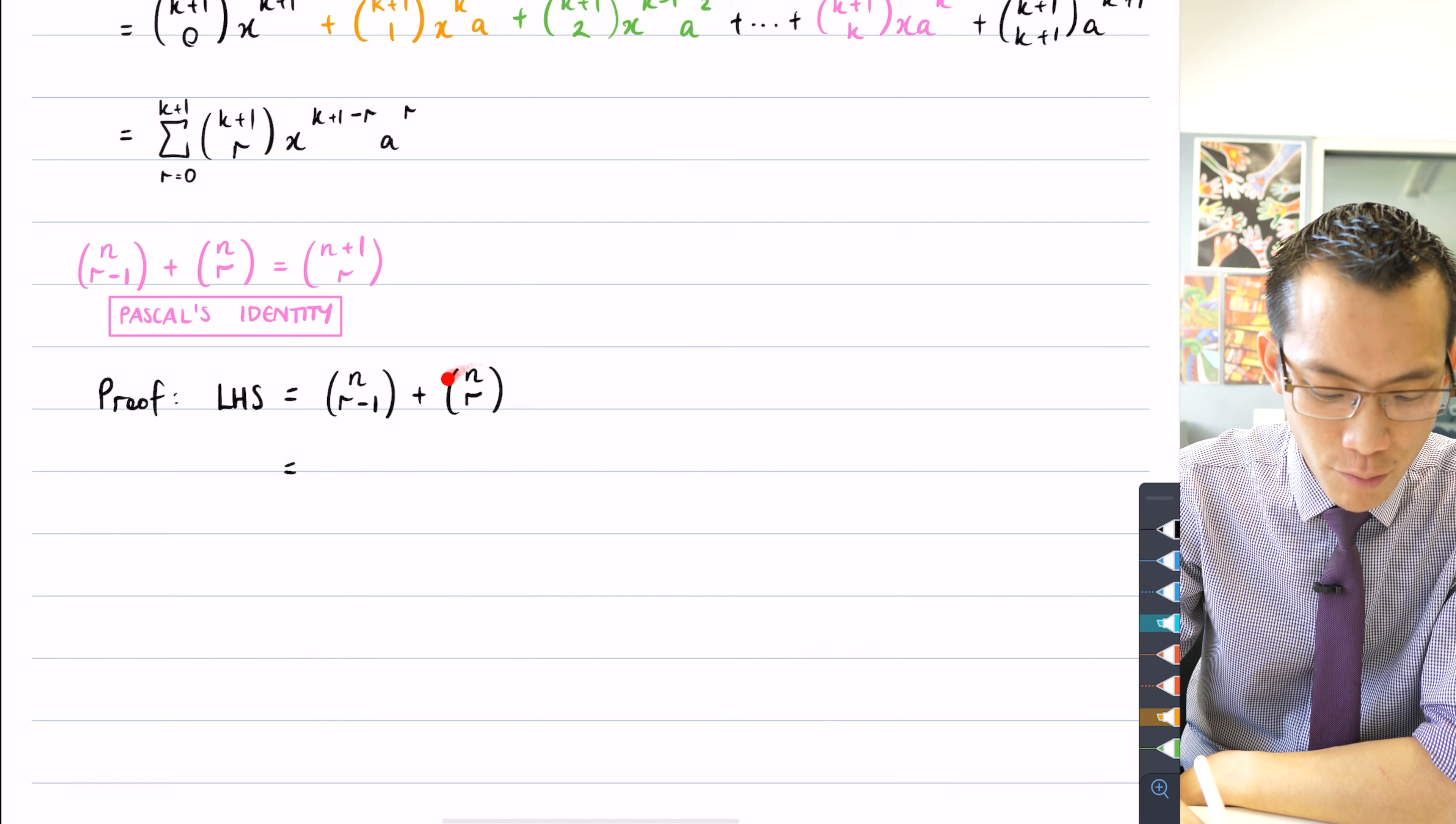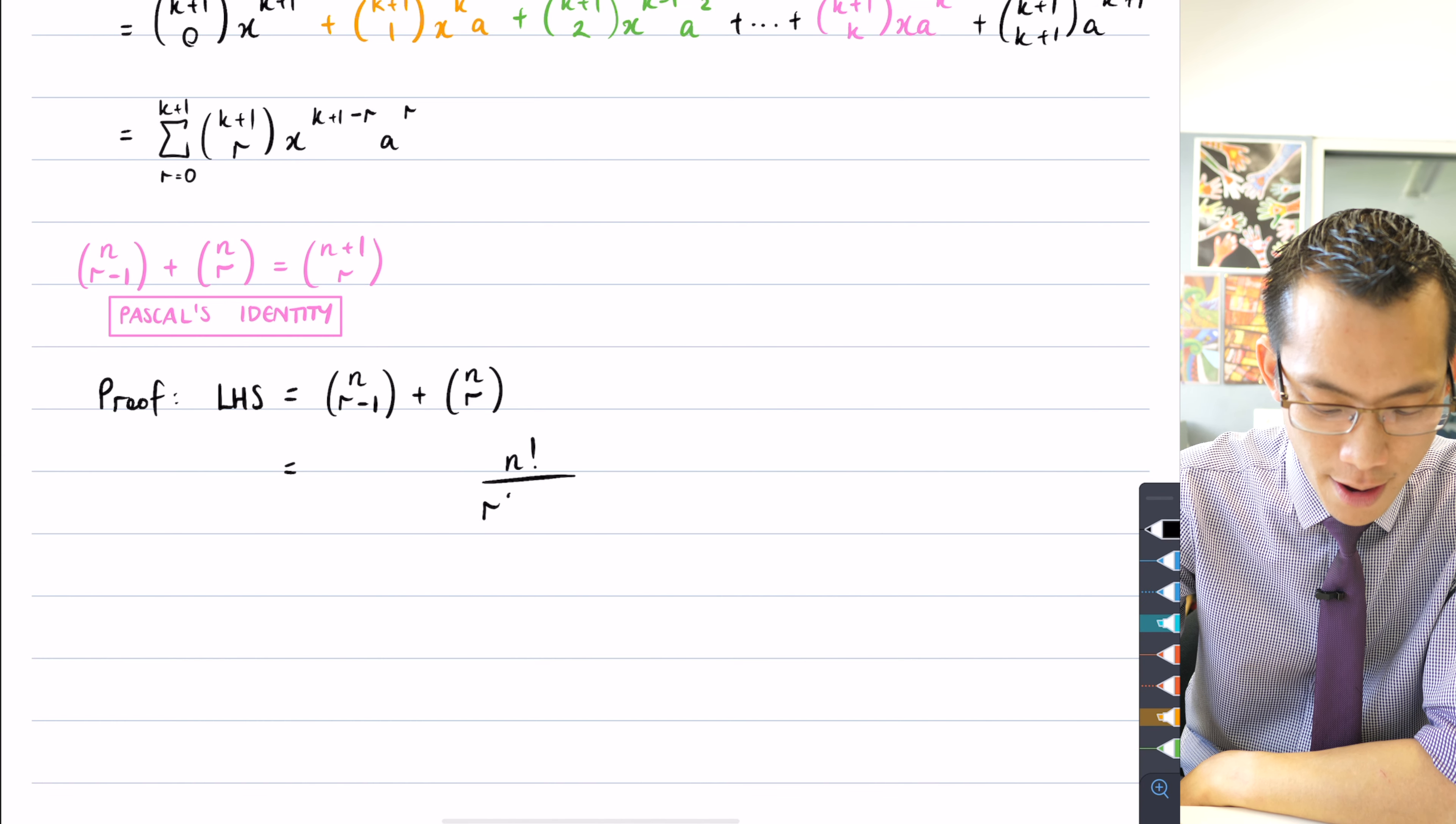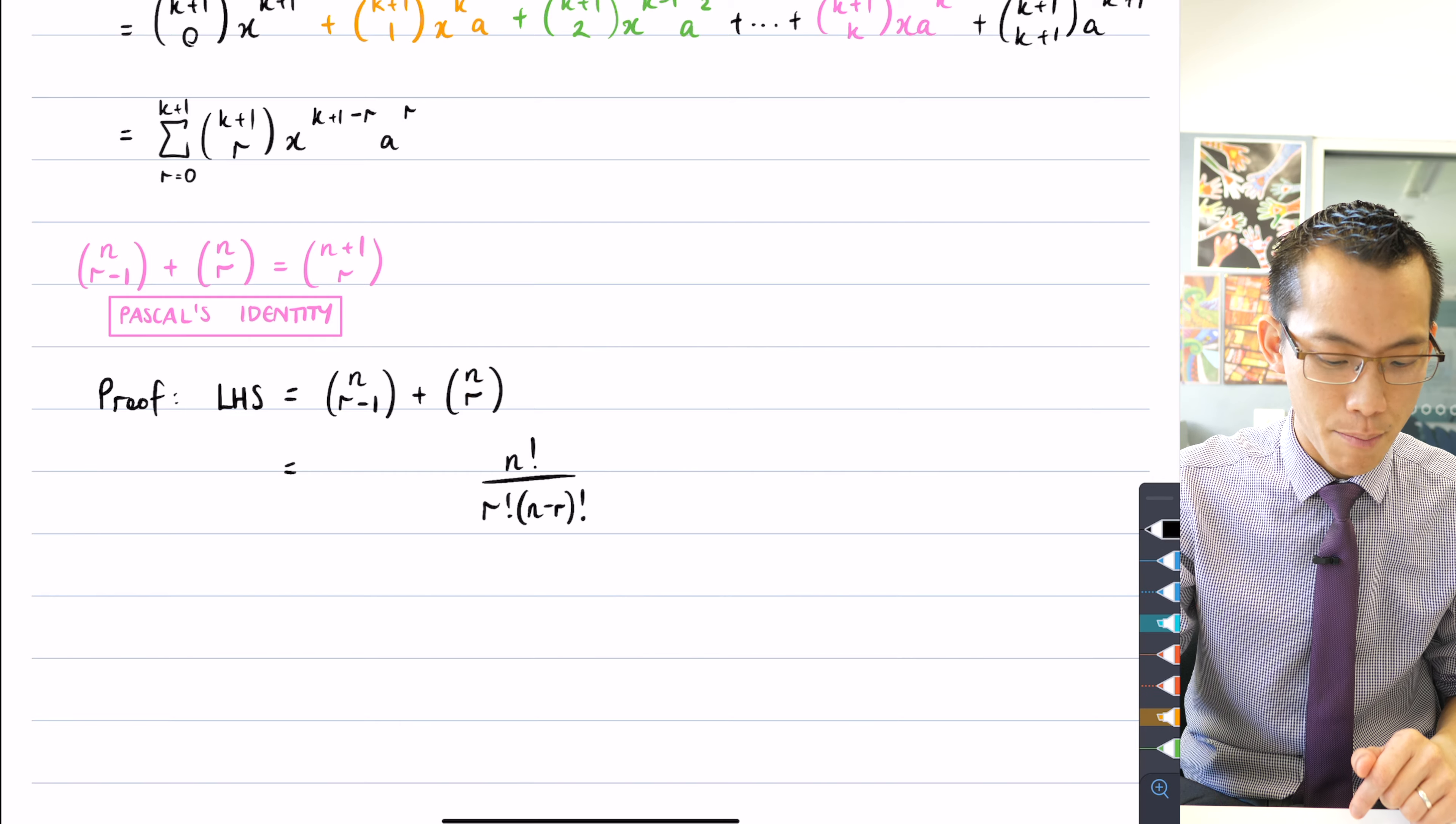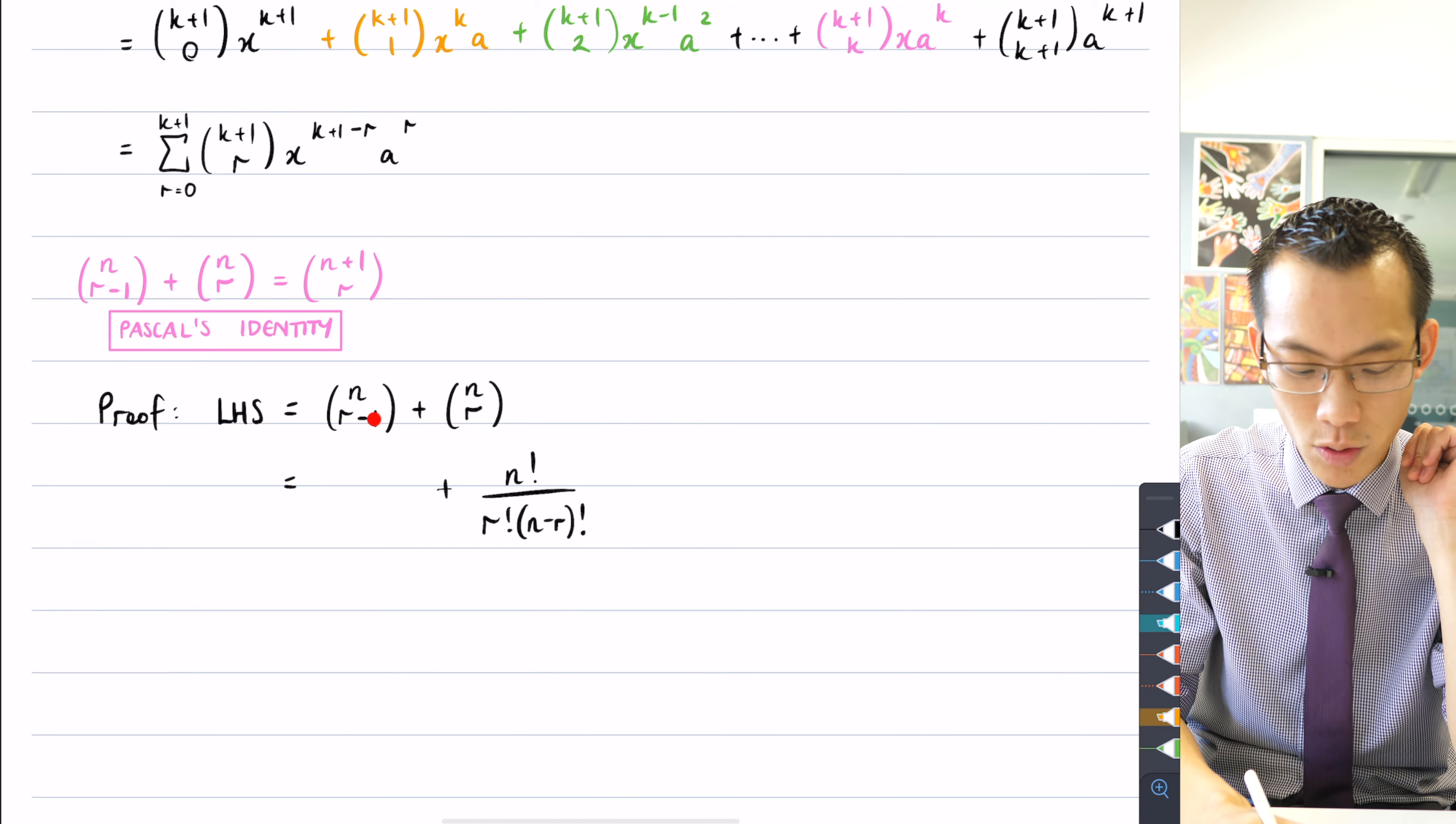It's actually going to be easier if we do this right-hand term first because it's the sort of classical binomial coefficient. It's n factorial divided by r factorial n minus r factorial. So that's our definition for n choose r, or you can see it written in this sort of vertical bracket notation. And the reason why I highlight that is because it makes it easier to work out what the previous one is when it's got this pesky r minus one on the bottom.